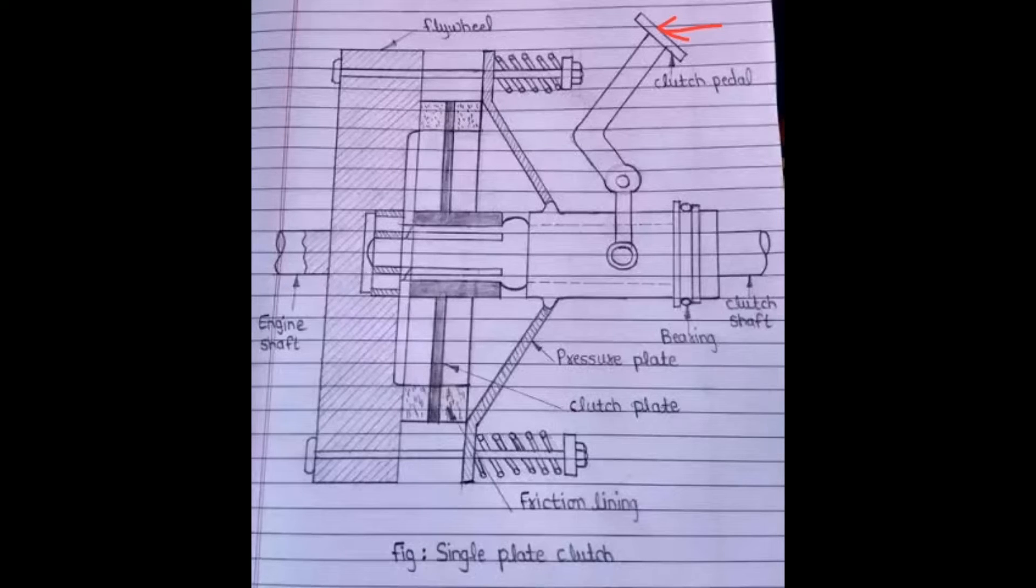And when we press the clutch pedal, the clutch spring gets compressed and the pressure plate lifts up. Due to that, the friction plate and the clutch plate also lift up and we get the disengaged position of the clutch.